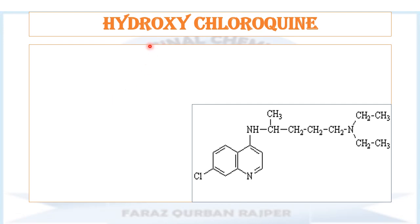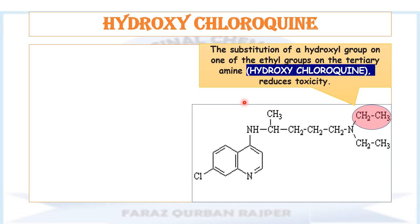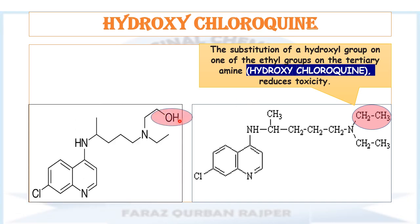Another derivative of 4-amino-quinoline is hydroxychloroquine. Hydroxychloroquine is synthesized by the substitution of a hydroxyl group at one of the terminal ethyl groups — if we replace one of the ethyl groups with a hydroxyl group, a new derivative is synthesized. In this structure you may observe that in the terminal chain we have a hydroxyl group at the end position instead of an ethyl group, so we have only one ethyl and one hydroxyl group, and this is the hydroxychloroquine drug.